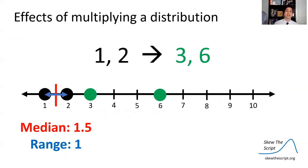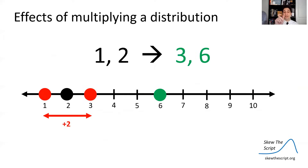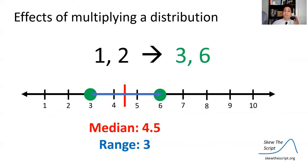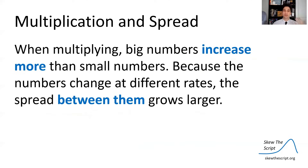We plot those new data points and find their median and range. Note that the value of 1, when multiplied by 3 to become 3, increased by 2. The value of 2, when multiplied by 3, gets to 6 — it increased by 4 units. So when you multiply numbers, small numbers increase by a lesser amount than big numbers. Bigger numbers get a higher boost than small numbers during multiplication. So not only does the median — the measure of center — go up, but the range, the spread between them, also increases, because the lower data point increased at a lesser rate than the higher data point.